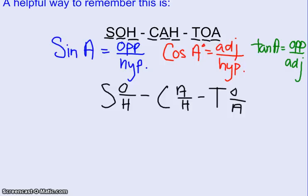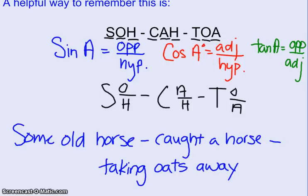Now some of you might say, that's great, but I can't even remember SOH-CAH-TOA. So when I was in high school, my teacher taught me a mnemonic to help me remember, and it goes like this: Some old horse caught a horse taking oats away. So you can remember, some old horse is your SOH, sine is opposite over hypotenuse. Caught a horse is the CAH, cosine is adjacent over hypotenuse. And taking oats away represents the TOA, T-O-A, tangent is opposite over adjacent.